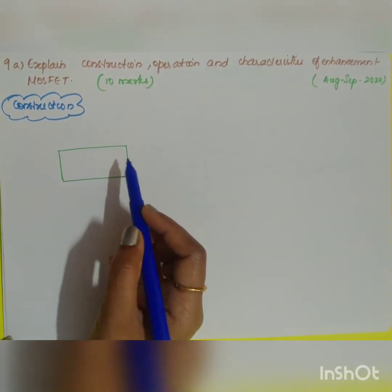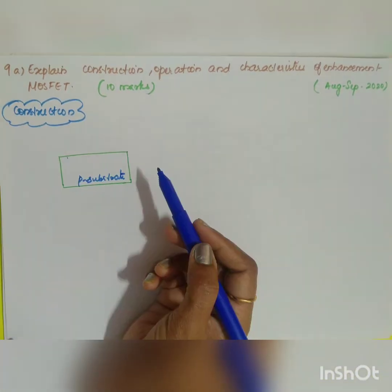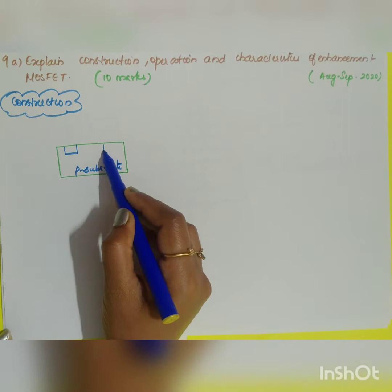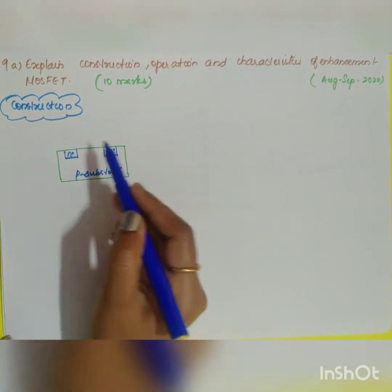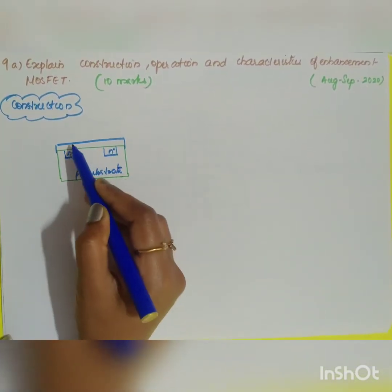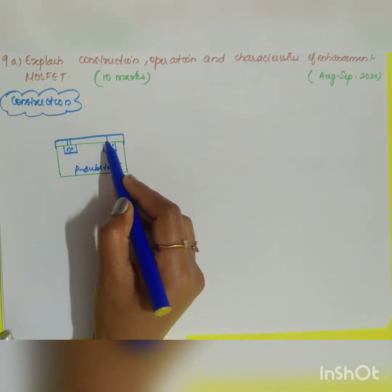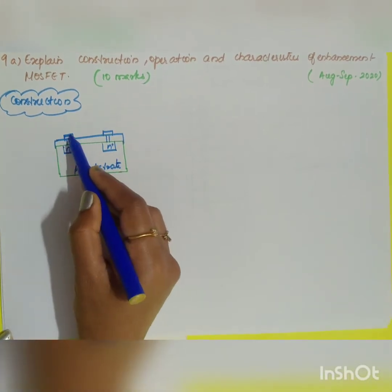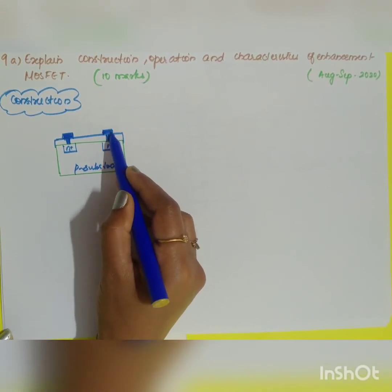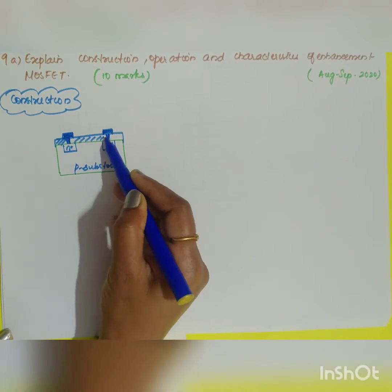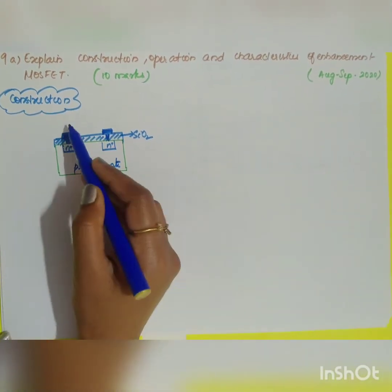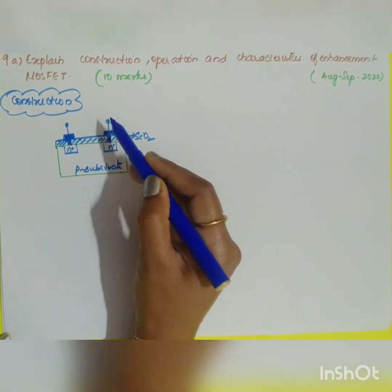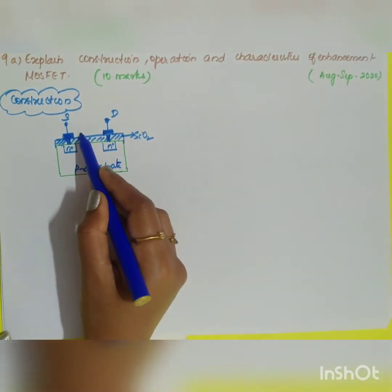The only difference between enhancement MOSFET and depletion MOSFET is the channel. You will have a p-type semiconductor acting as a substrate, to which two heavily doped n-type semiconductors are embedded. There will be a silicon dioxide layer, which acts as the insulator (SiO2) between the metal contact and the substrate.